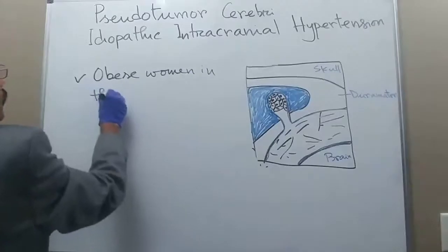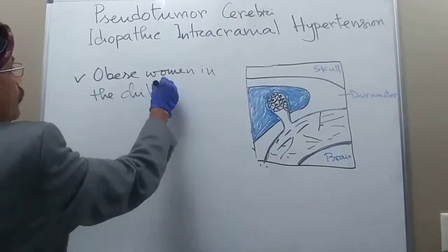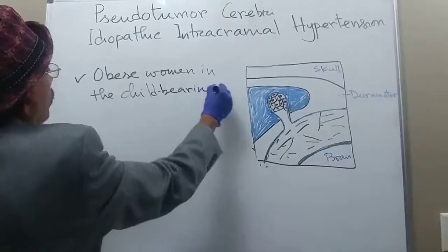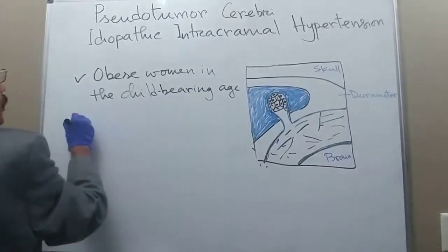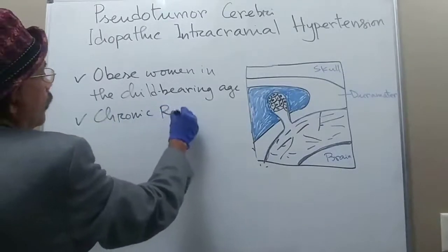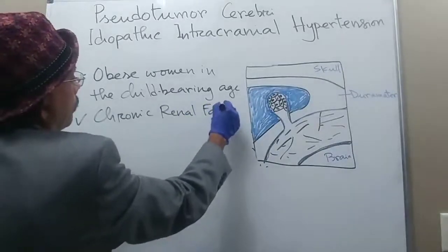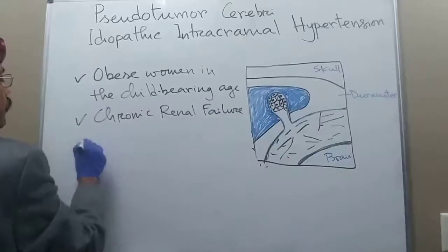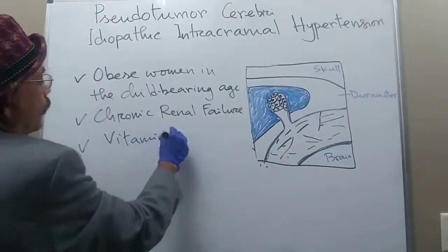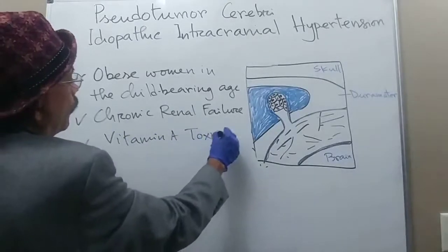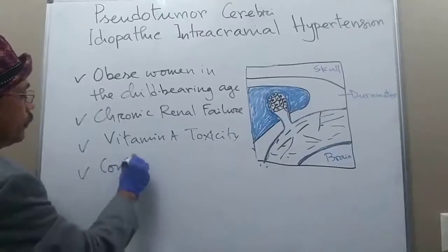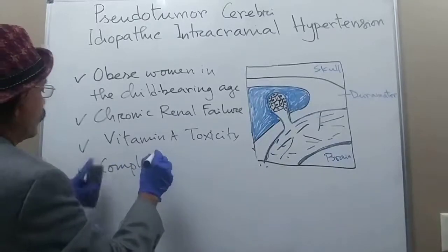It is seen in women in the childbearing age. It is also seen in cases of chronic renal failure. It may also be a manifestation of vitamin A toxicity, or it may be a complication of some medications.